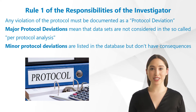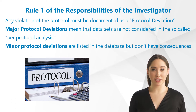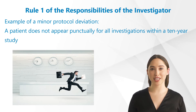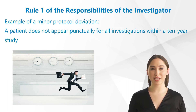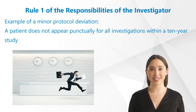Major protocol deviations mean that data sets are not considered in the so-called per protocol analysis. Minor protocol deviations are listed in the database but don't have consequences. An example of a minor protocol deviation perhaps would be if a patient does not appear punctually for all investigations within a 10-year study. Such protocol deviations must absolutely be documented with reasons in the source data.